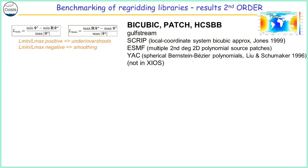For second order remapping, the implementations differ: for SCRIP it's a local coordinate bicubic approximation, for ESMF it's a polynomial patch, and for YAC you have the circular burst. The Lmin and Lmax metrics show: if Lmin is positive it means undershoots, if Lmax is positive it means overshoots, and if they are negative it means some smoothing of the function.